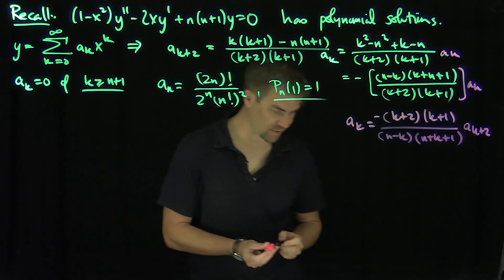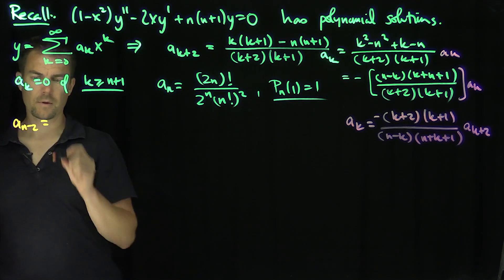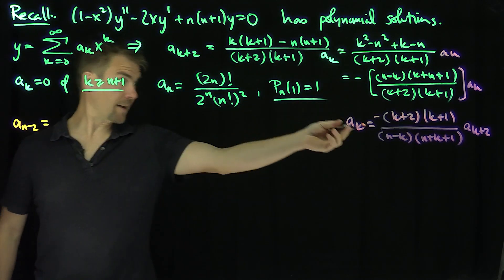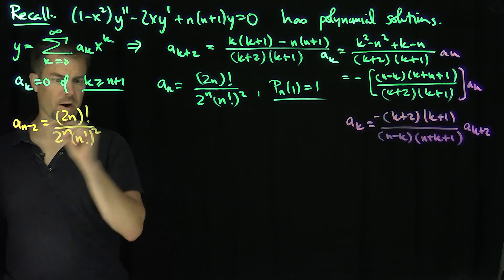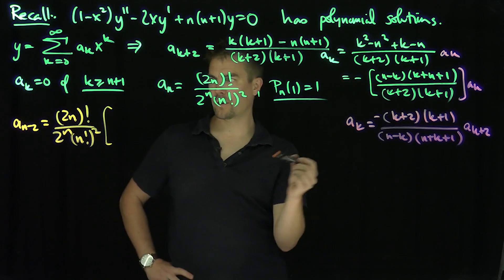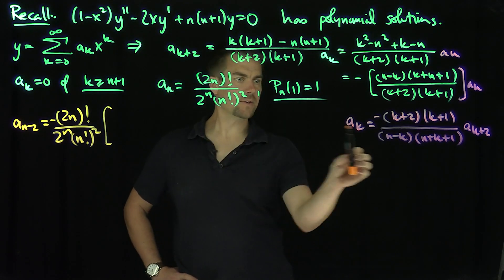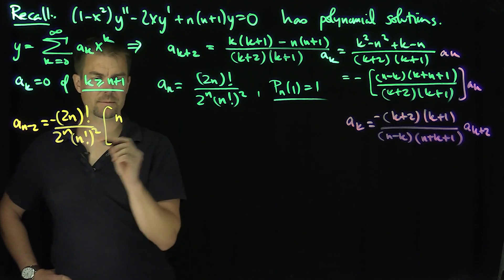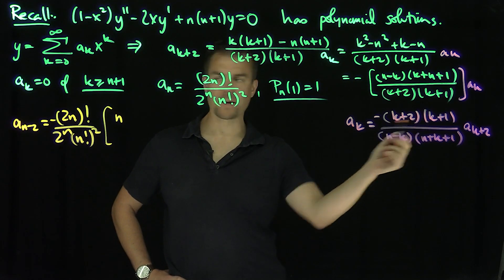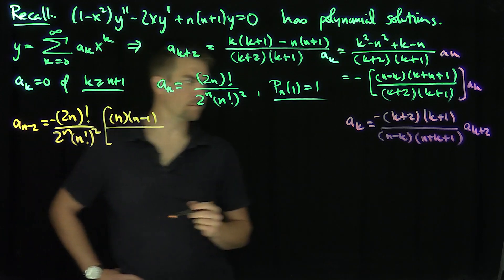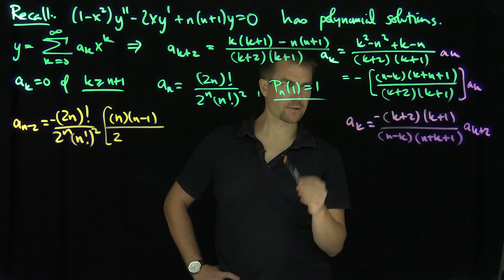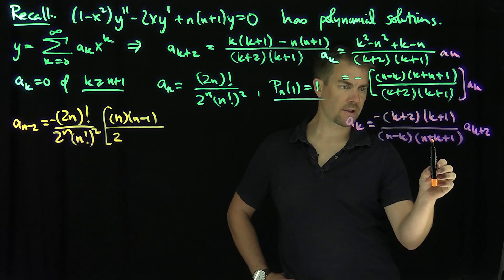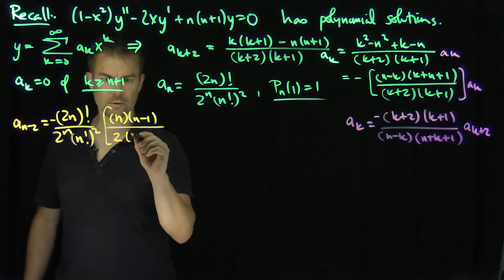In particular, what is a_{n-2}? Setting k equals n-2: a_{n-2} equals a_n, which is (2n)! over 2^n (n!)², times the next term. Plugging in k = n-2, the numerator gives n(n-1) and the denominator gives 2, then (n minus (n-2)) gives 2, and n + (n-2) + 1 gives 2n-1. So a_{n-2} has a negative sign in front, with factors n, n-1, and 2n-1.